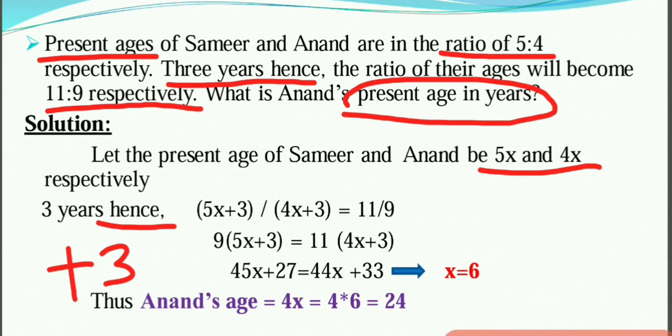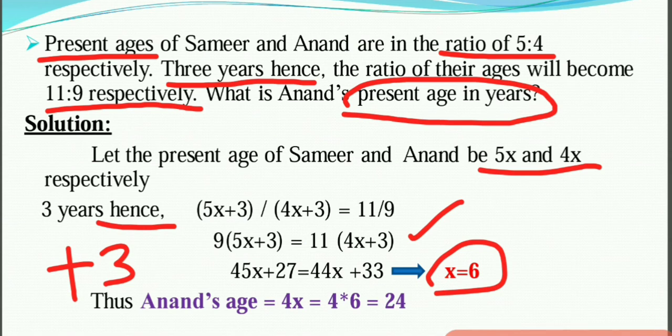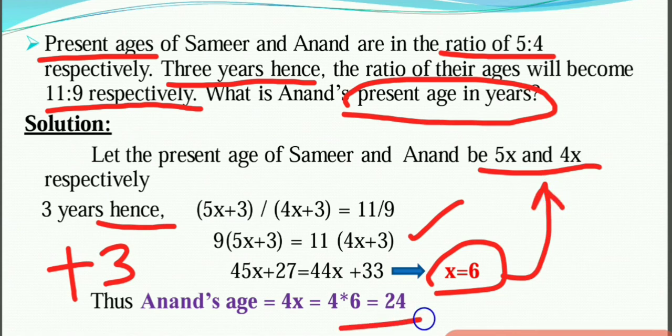Cross-multiplying: the value of x equals 6. This is the common ratio value x. Anand's present age is 4x, so 4 times 6 equals 24. Anand's present age is 24.